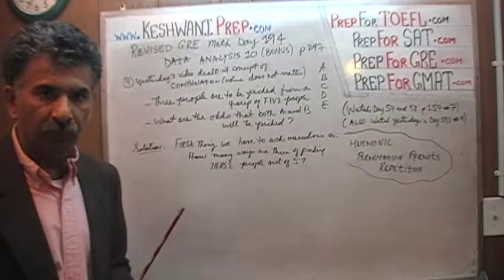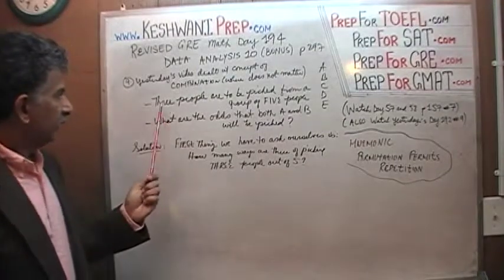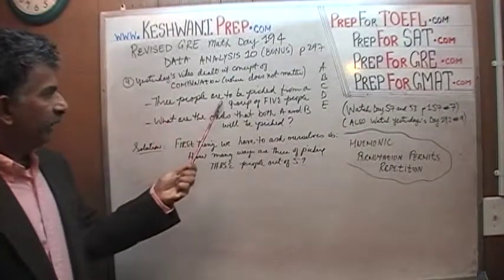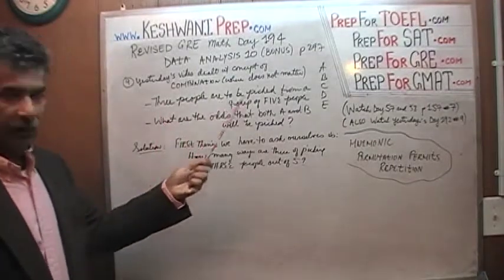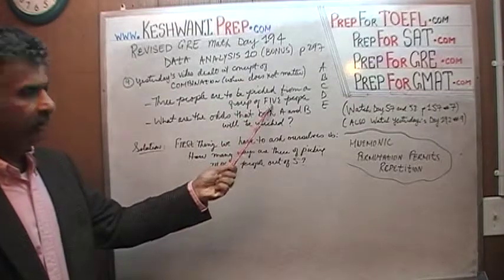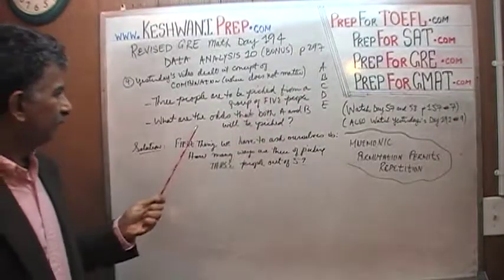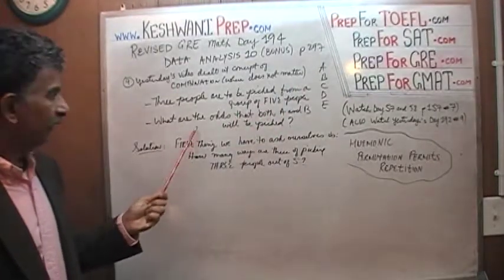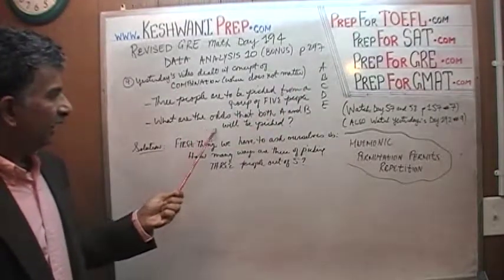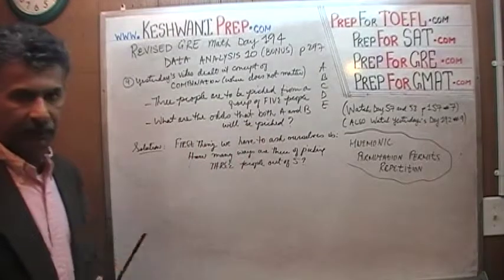This is the problem that I gave you yesterday to work on. Here is the problem: three people are to be chosen from a group of five people, and we give them names A, B, C, D, E. The question simply is: what are the odds that both A and B will be picked?